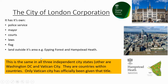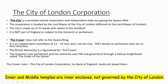This situation is the same in all three independent city-states, the others being Washington DC and the Vatican City. They are countries within countries, but only the Vatican City has officially been given that title. However, the way Washington DC and the City of London are run and managed is the same.